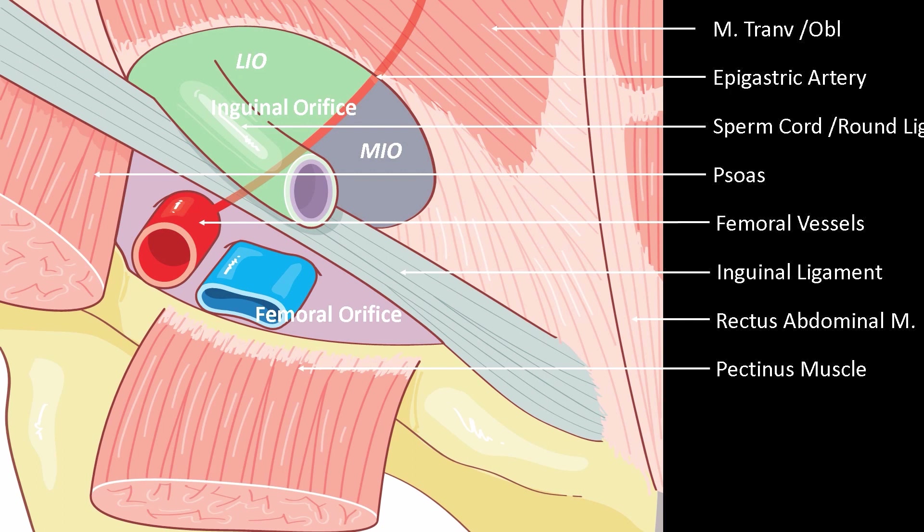This inguinal orifice is itself divided into two by the inferior epigastric artery, which separates outside the lateral inguinal orifice — which corresponds to the zone of passage of the inguinal canal — and within, the medial inguinal orifice.